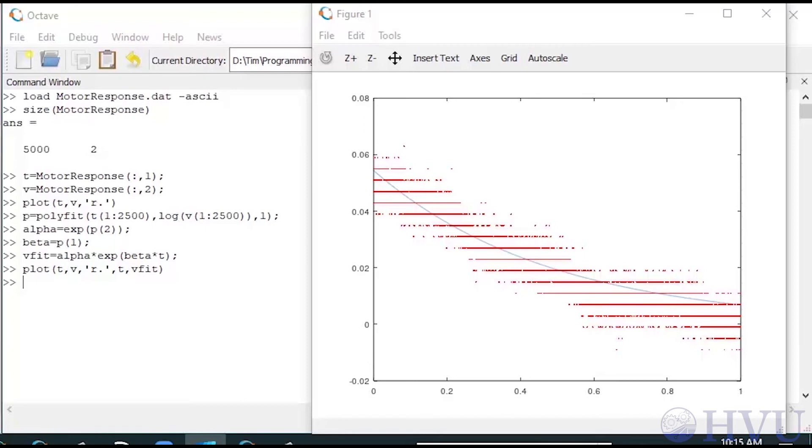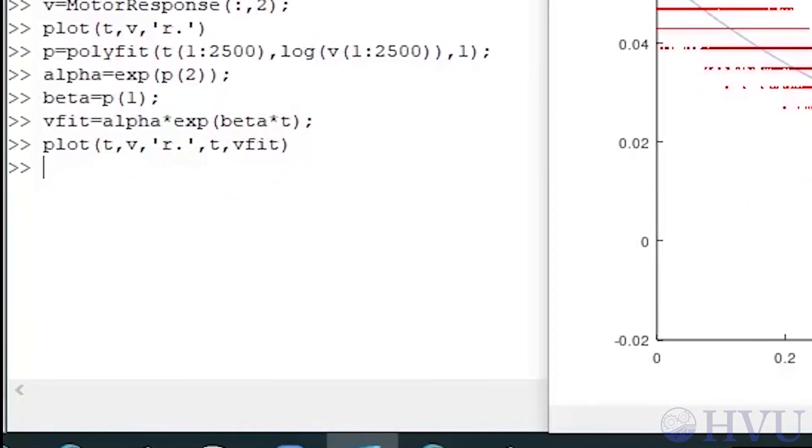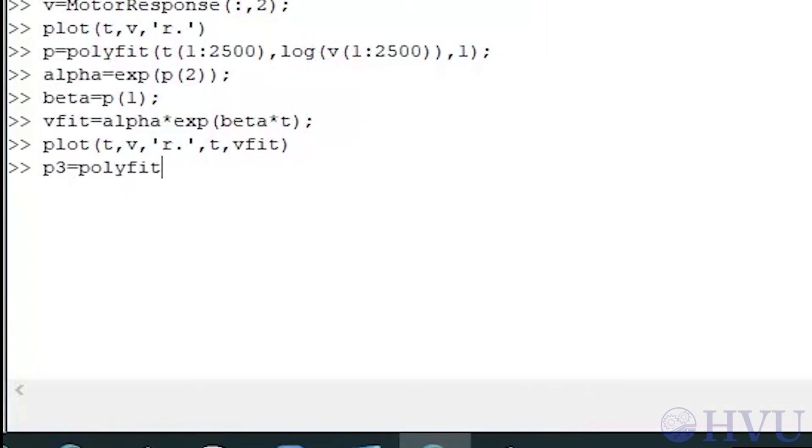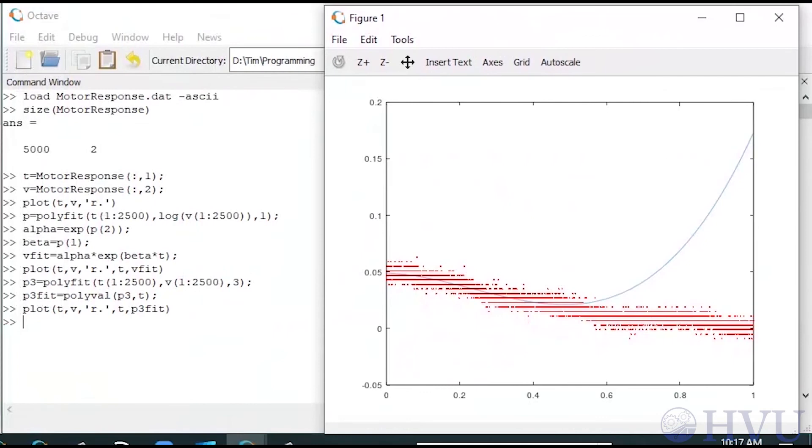Now I'll do the same process but fit a third order polynomial to the data. I'll still use only the first 2500 points for the curve fit, but I'll evaluate the polynomial for the entire 5000 points when I compare the result to the data. Finally I'll plot the data and the curve fit over the entire time period. The curve fits pretty good for the first half of the time period, but things start to look really strange after that. The curve fit is saying that after the motor's turned off the flywheel will slow down for a while but will then start to speed up again. This is obviously wrong since it's not physically reasonable.